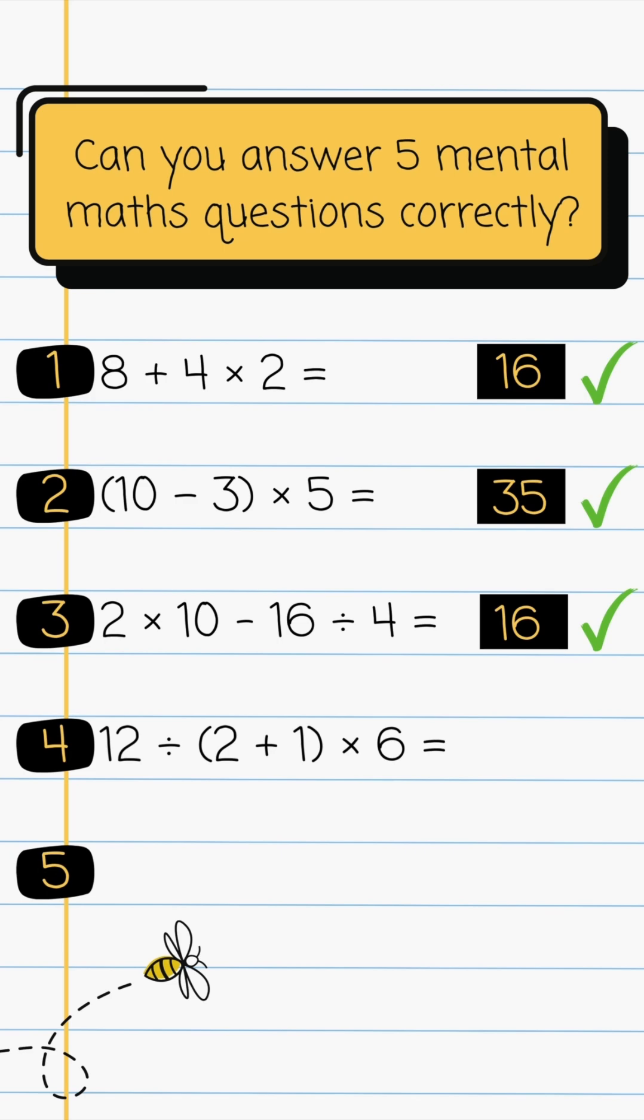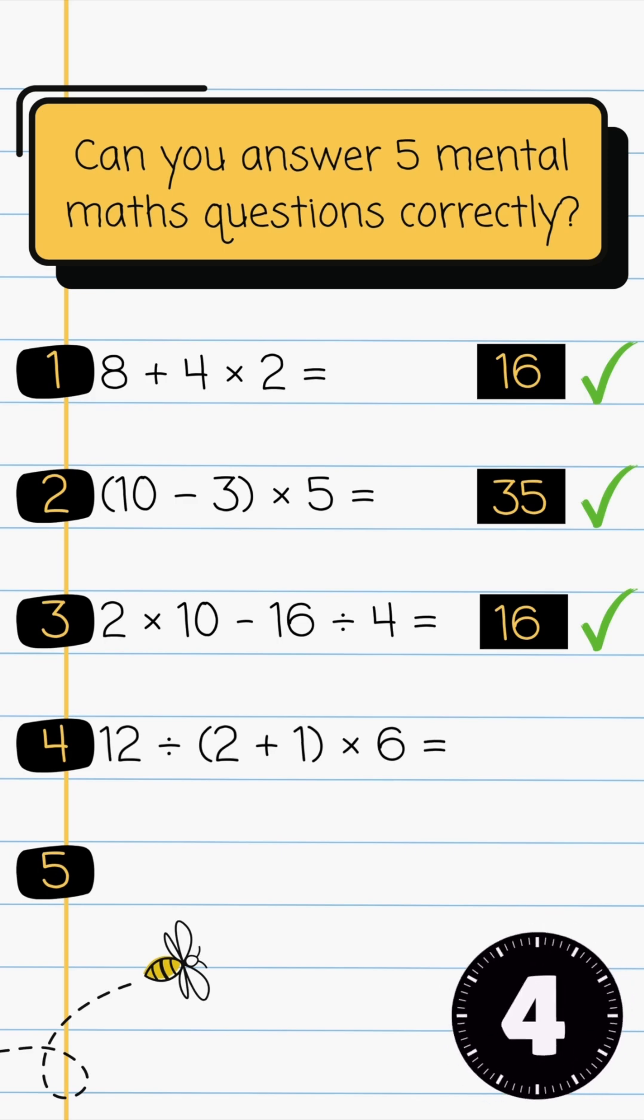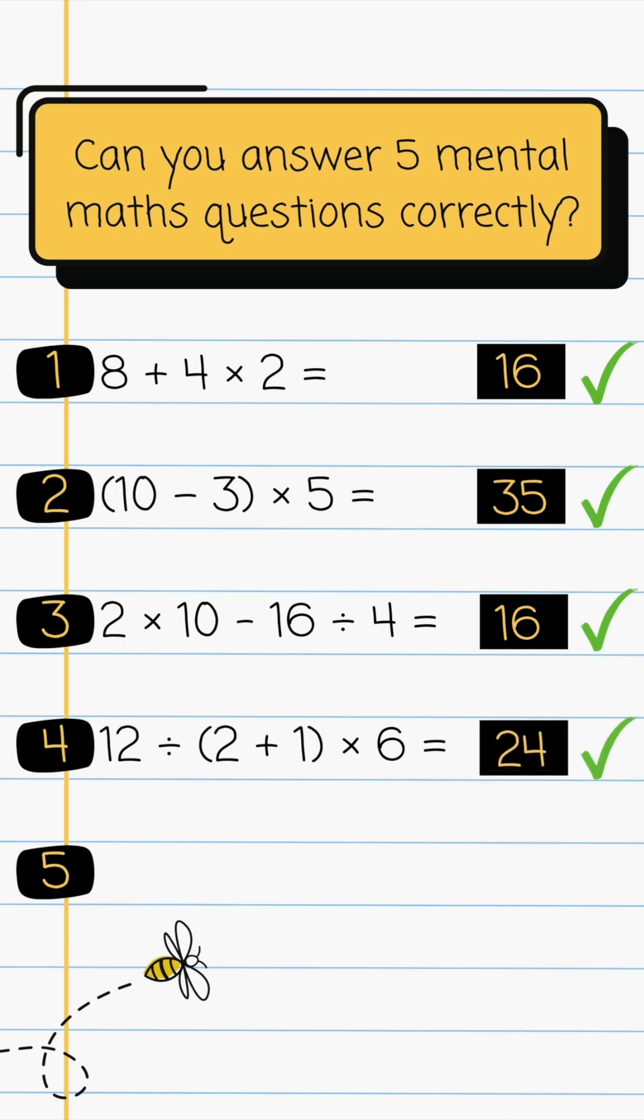Question 4. 12 divided by 2. Add 1 multiplied by 6. The answer is 24.